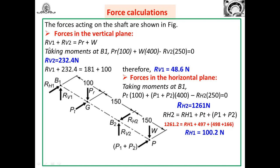For forces in the vertical plane: RV1 + RV2 = Pr + W. Taking moments at B1: Pr × 100 + W × 400 − RV2 × 250 = 0, giving RV2 = 232.4 N. Substituting back: RV1 = Pr + W − RV2 = 181 + 100 − 232.4, giving RV1 = 48.6 N.